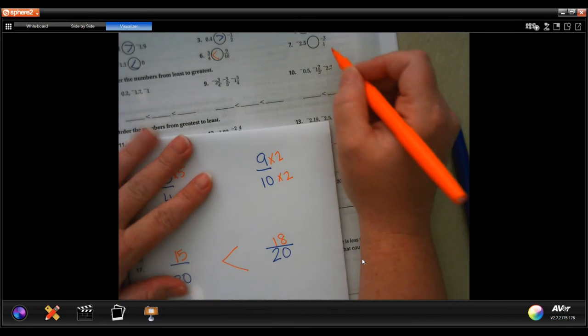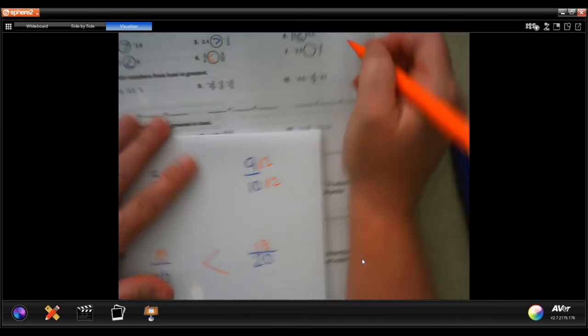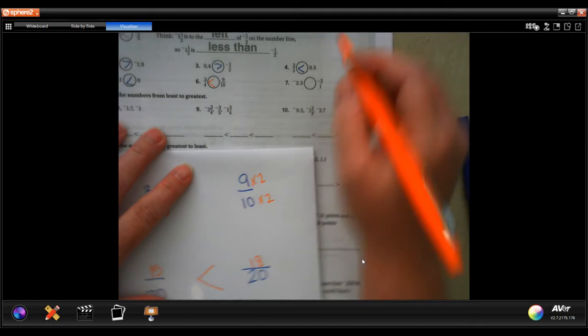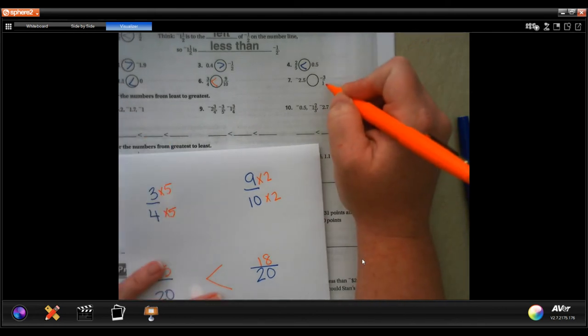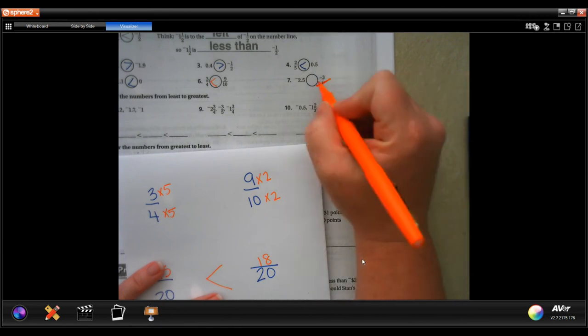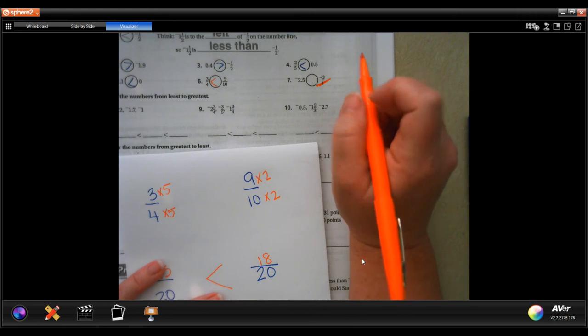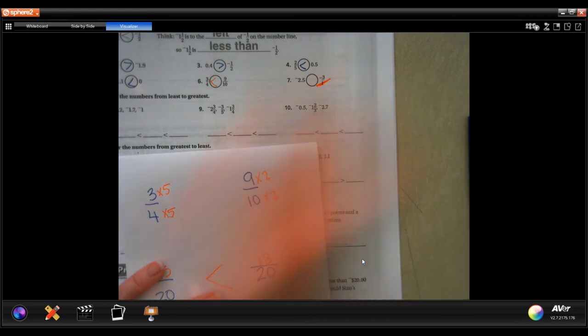I want you guys, oh goodness, they threw one at you for a doozy just for fun. So negative 3 over 1, anything over 1 is just itself. So you have negative 2.5 and negative 3. You guys tell me which one is bigger. Remember, when it's negative, whatever's closer to the 0 is bigger.